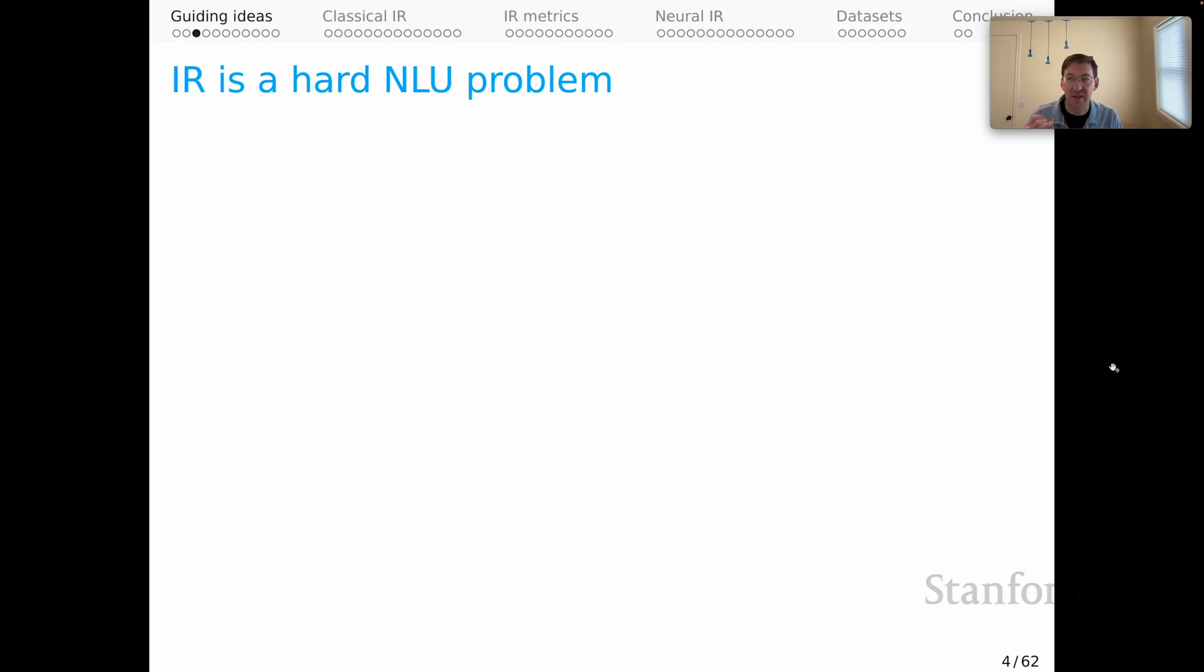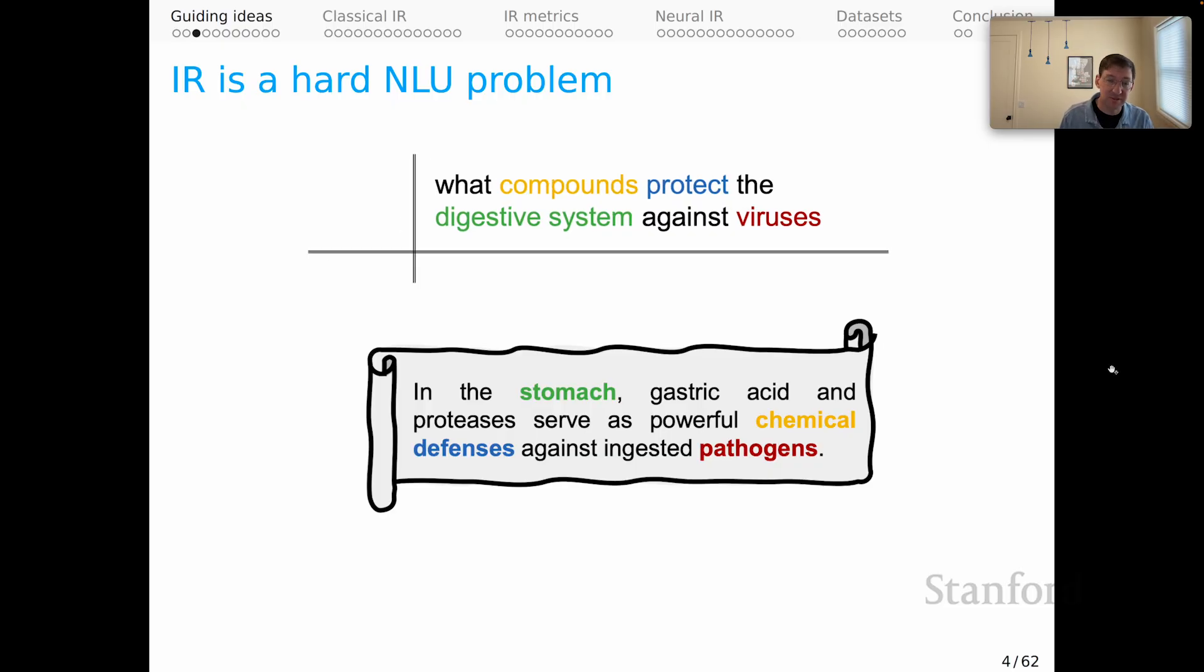You might ask yourself why this is happening. I think the fundamental reason is that information retrieval is simply a hard natural language understanding problem. And so the more powerful our NLU technologies, the better we can do with retrieval. Here's an example that brings that point home. Our query is what compounds protect the digestive system against viruses. And a relevant document is in the stomach, gastric acid and proteases serve as powerful chemical defenses against ingested pathogens. The coloring indicates relevance connections. You'll notice that for the keywords in the query in the document, there is no string overlap. The connections that we need to make here are entirely semantic.